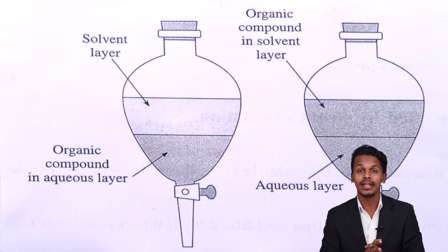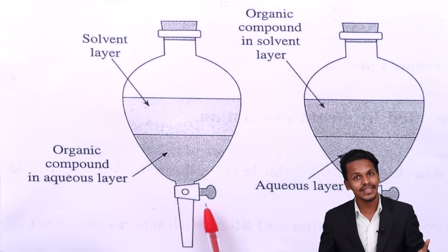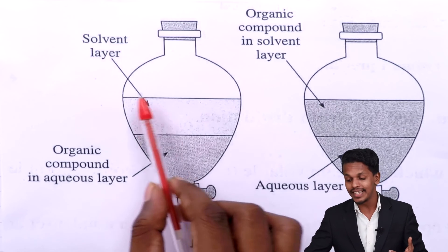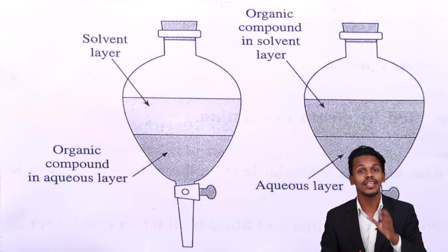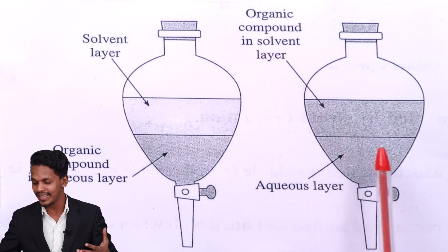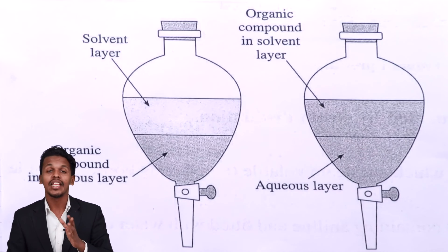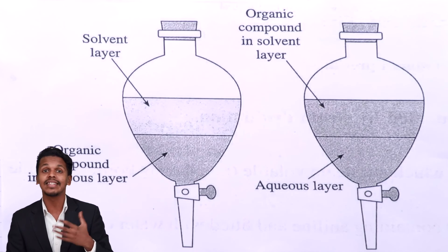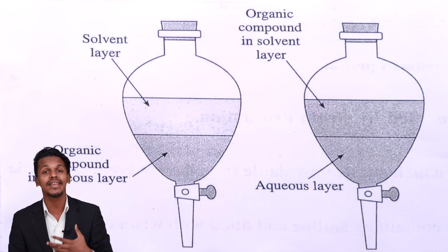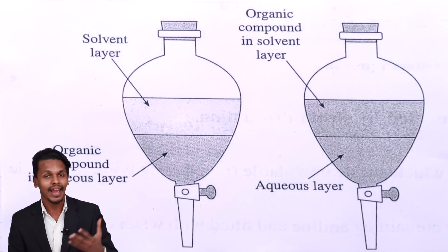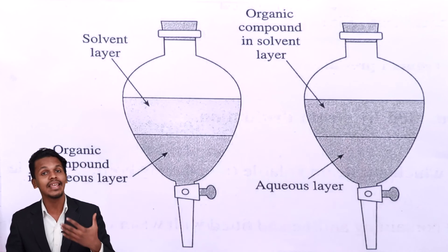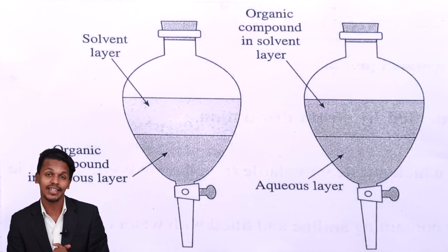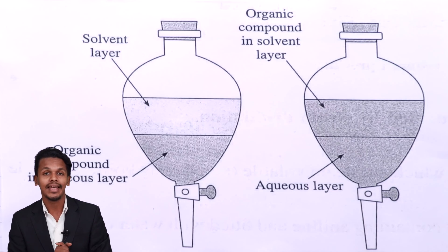This is the extraction process, but we still need to isolate the organic compound. There is a cork at the bottom of the separatory funnel — we open it and release the aqueous layer. What remains is the solvent layer containing the organic compound. To obtain the pure organic compound, since the organic solvent is often a volatile substance, we allow it to evaporate. If the organic compound is non-volatile, it remains as a residue which we can then purify.